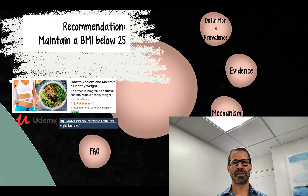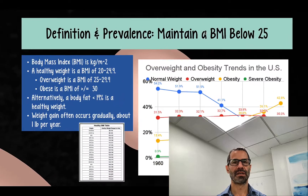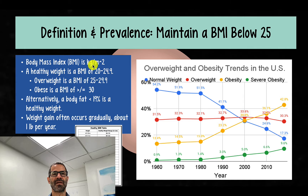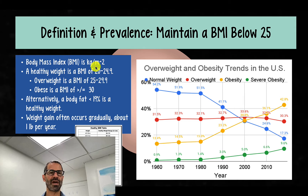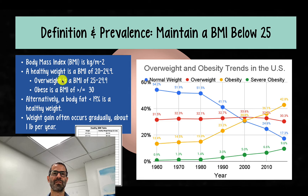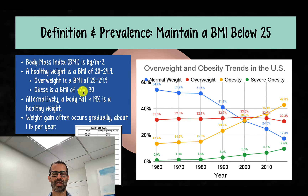Let's look at the definition for this recommendation and the prevalence of overweight and obesity in the United States. Body mass index, BMI, is defined as kilograms per meter squared — essentially a measure of healthy weight given your height. A healthy weight is a BMI of 20 to 24.9. Overweight is a BMI of 25 to 29.9. Obese is 30 to 39, and extreme or severe obesity is a BMI of 40 or greater.